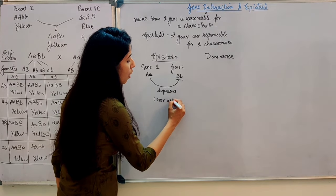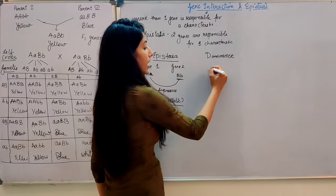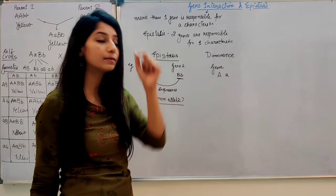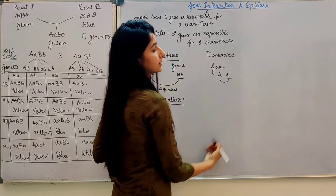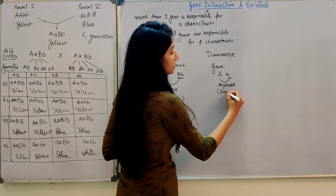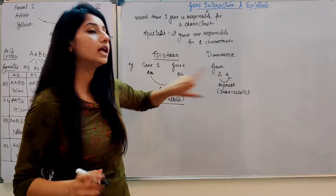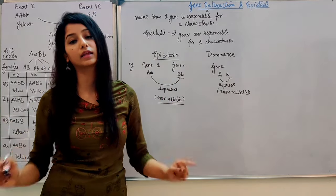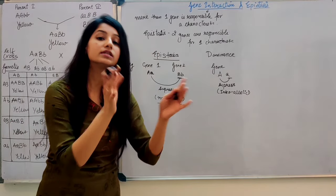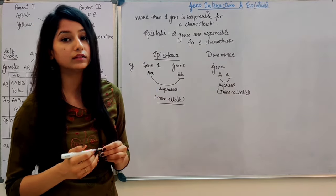This is a non-allelic condition. In dominance, the interaction is within one gene's alleles. But when two alleles from different genes suppress each other, that is epistasis — it is inter-allelic. This is the key difference between epistasis and dominance. In epistasis, one gene suppresses another gene — the suppressing gene is called the epistatic gene.